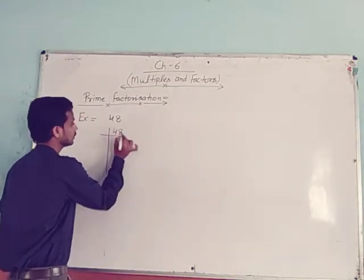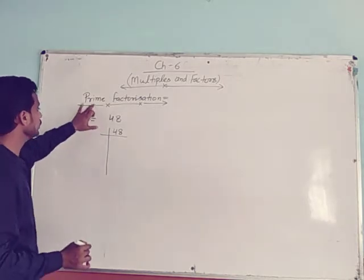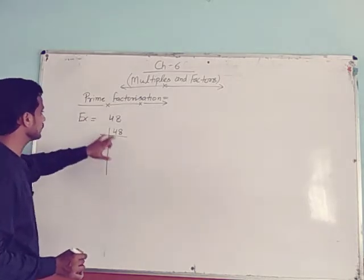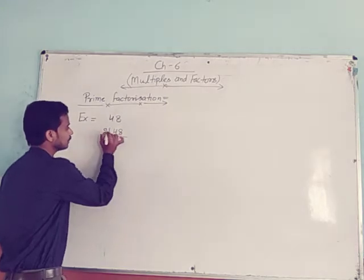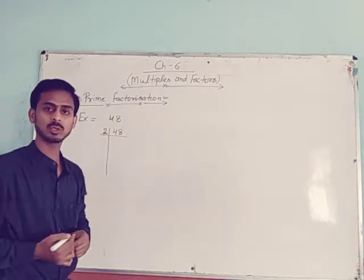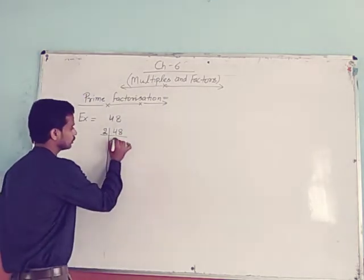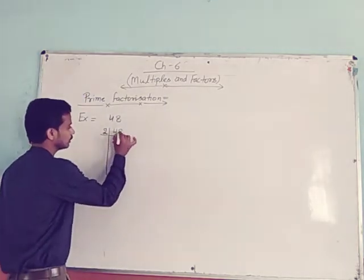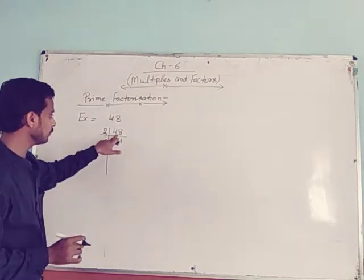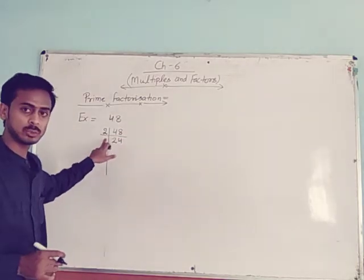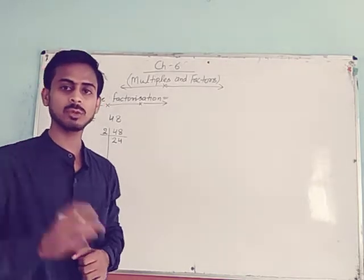Since the word here is 'prime', we will divide this number by prime numbers. The smallest prime number is 2. Divide the number by 2. When you divide 48 by 2, you will get 24 as quotient.